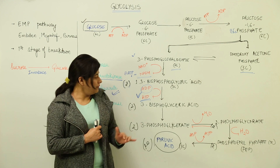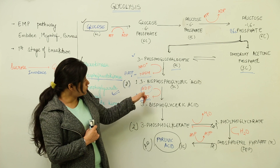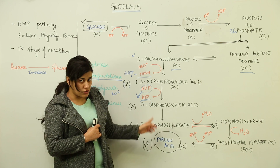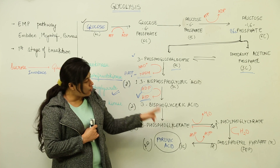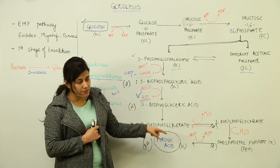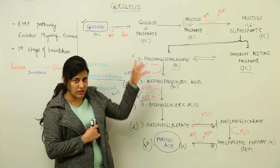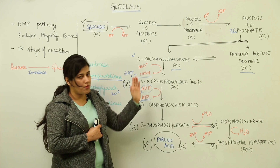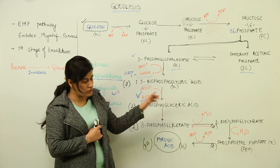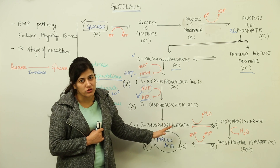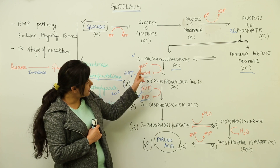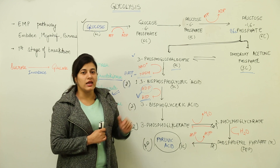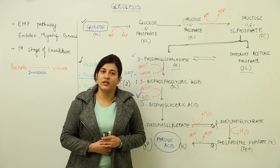To summarize the net outcome of glycolysis: four ATP molecules are generated but two are used, so the net yield is two ATP molecules. At the same time, we get two molecules of NADH.